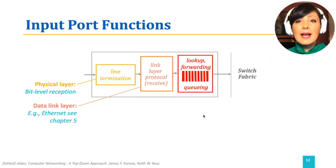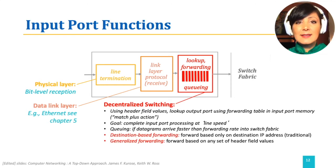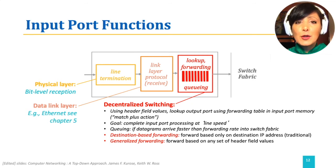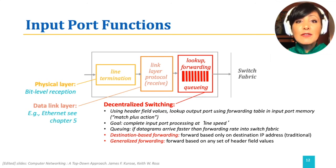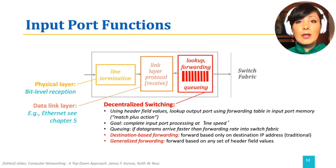The lookup and forwarding is the next functionality. In this step, the packet header fields are checked against the forwarding table entries in the router to decide what output port to select for the incoming packet. If traditional forwarding is in use, the destination of the packet will be used while consulting the forwarding table. In generalized forwarding, forwarding of the packet to the output port will be based on a set of header fields consulted against the generalized forwarding table.